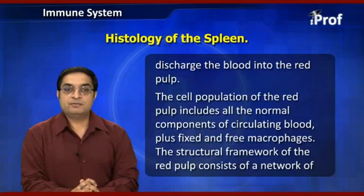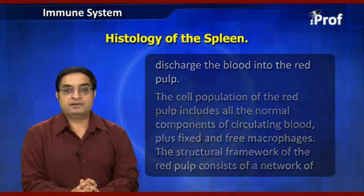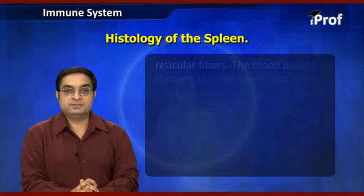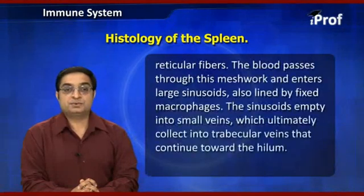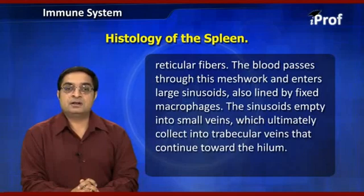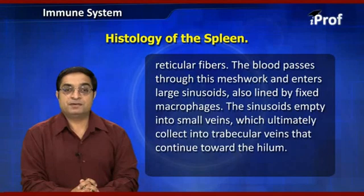The structural framework of the red pulp consists of a network of reticular fibers. The blood passes through this network and enters large sinusoids, which are also lined by fixed macrophages.